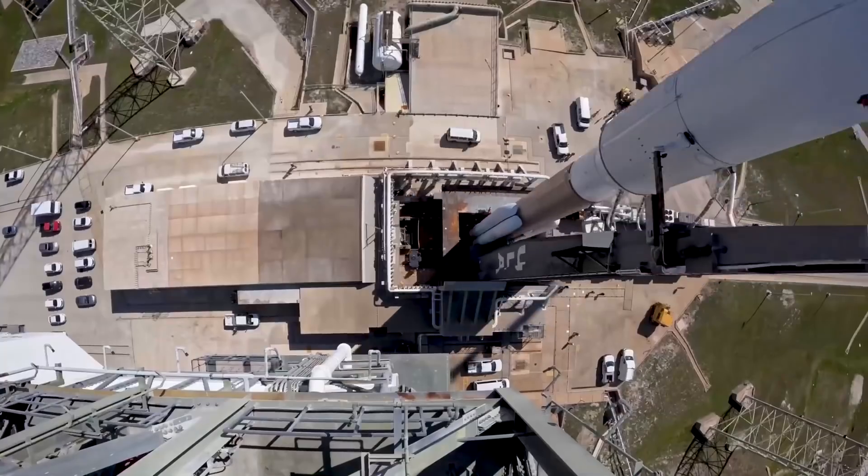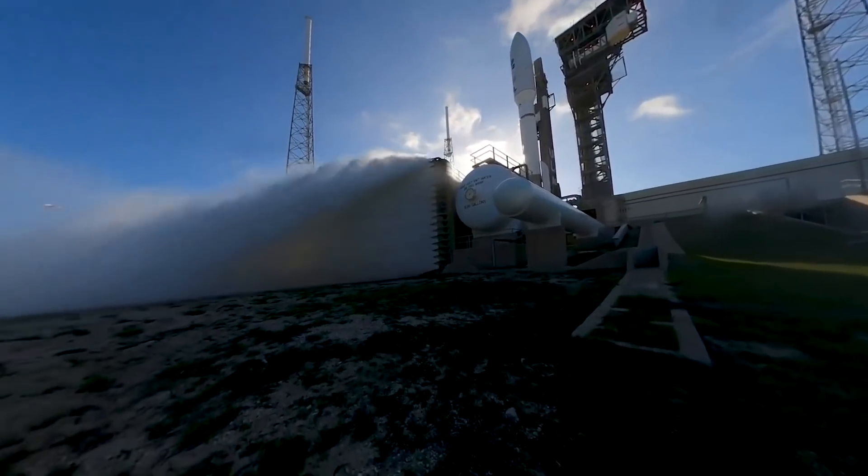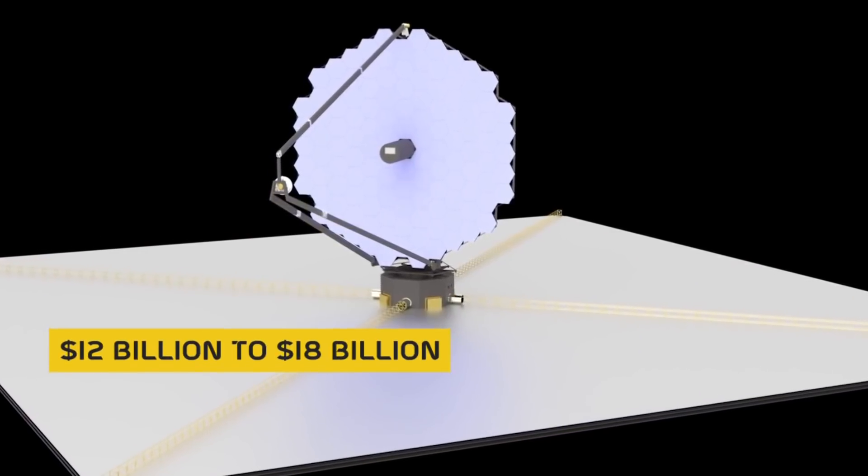LUVOIR-B was designed to launch on a heavy-lift rocket with an industry-standard 5-meter-diameter launch fairing. Lifetime cost estimates range from $12 billion to $18 billion.